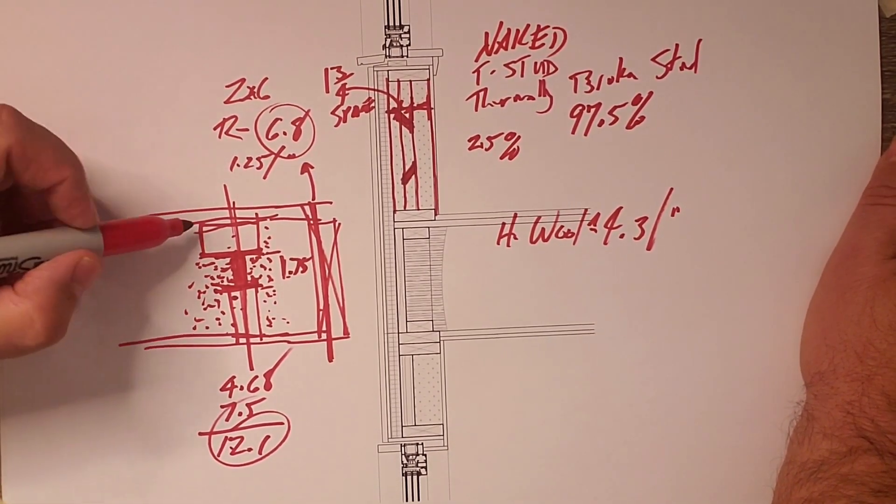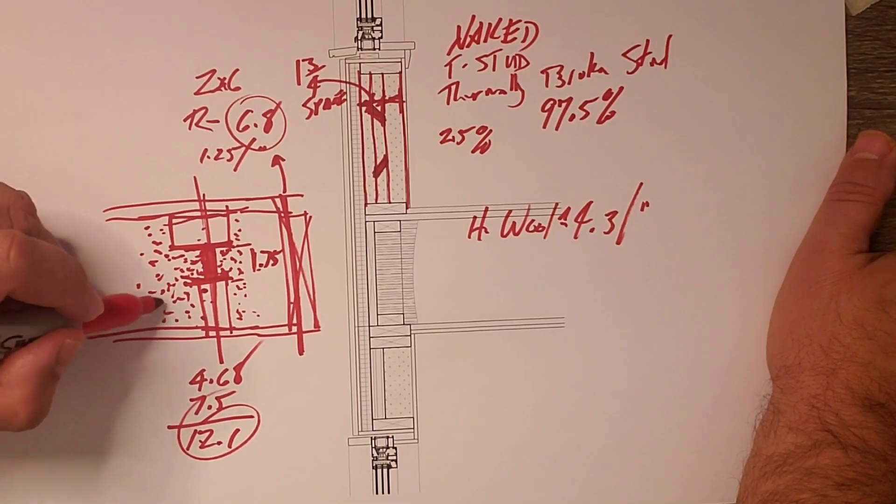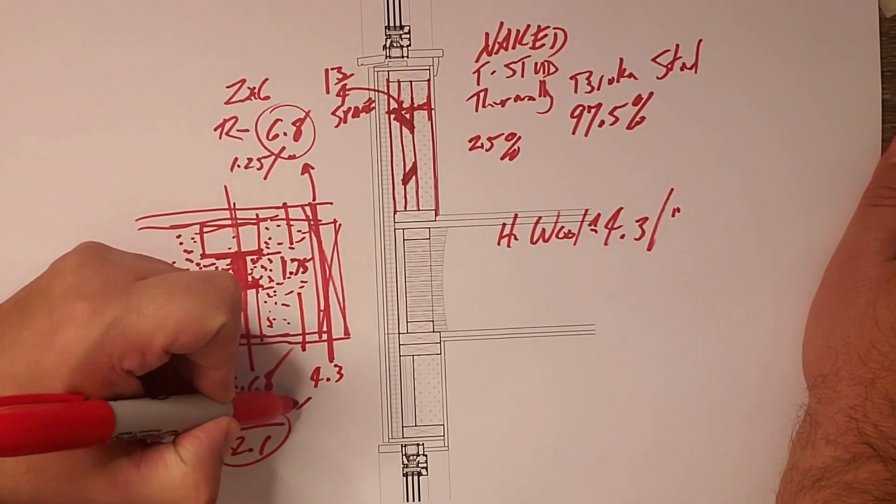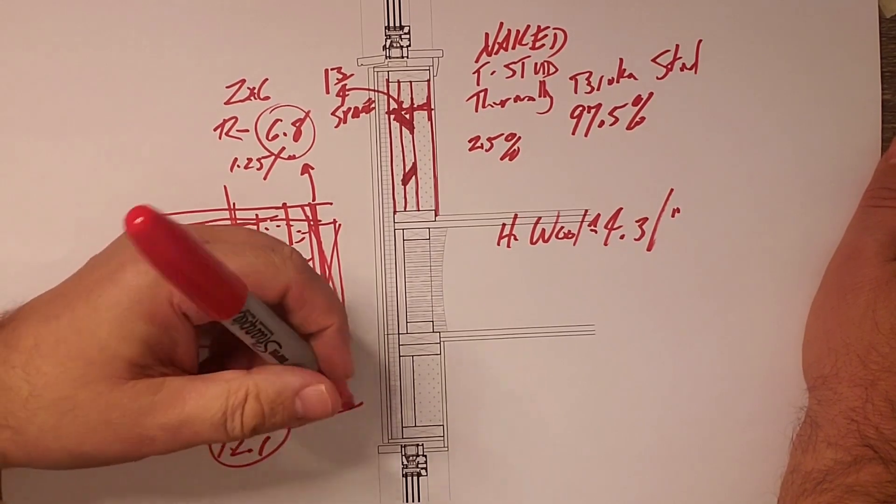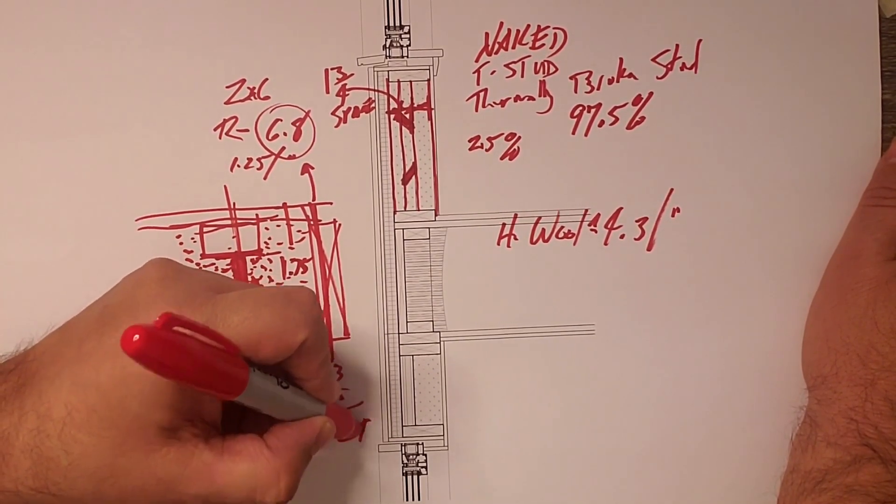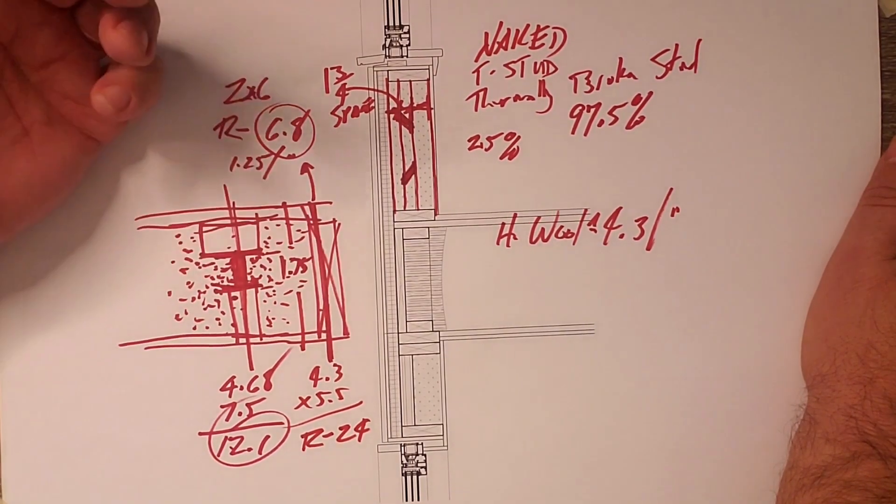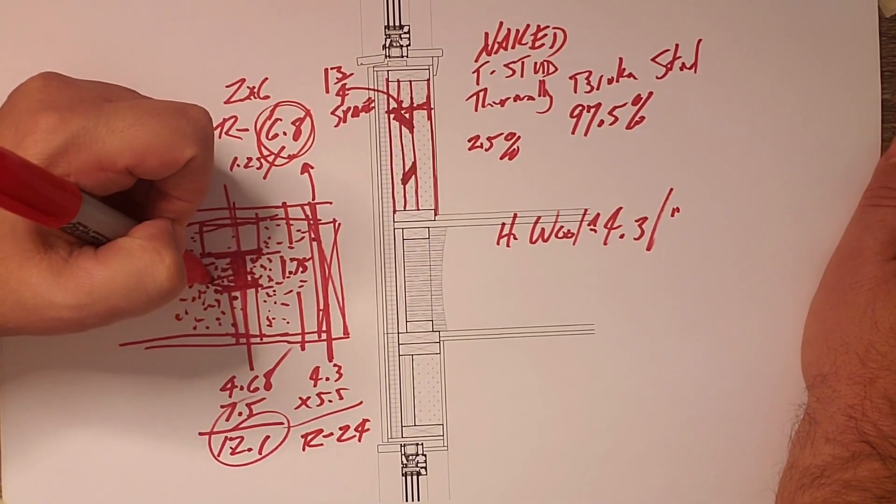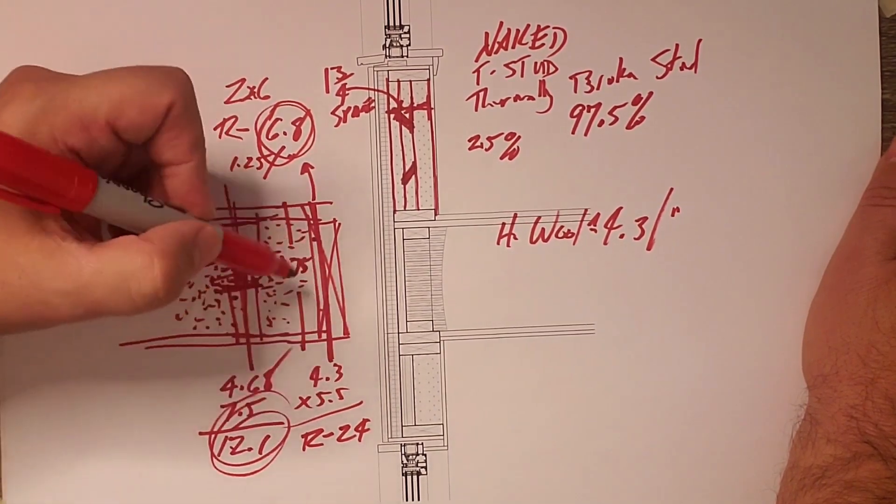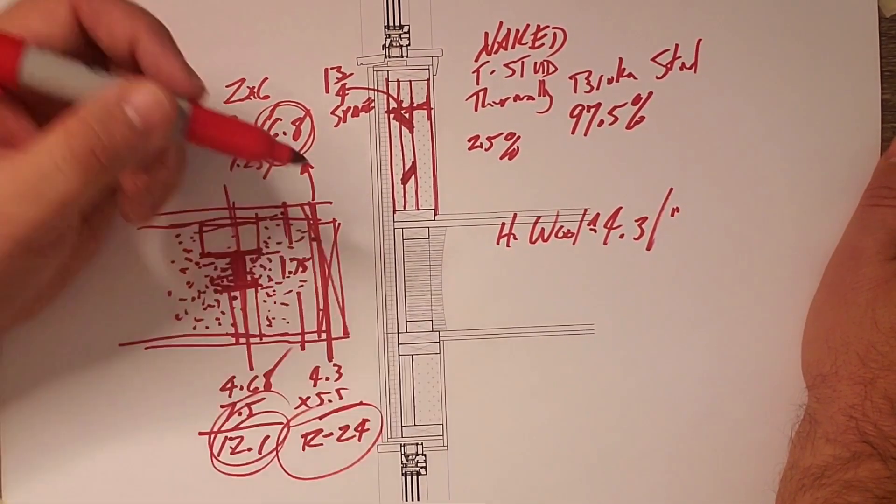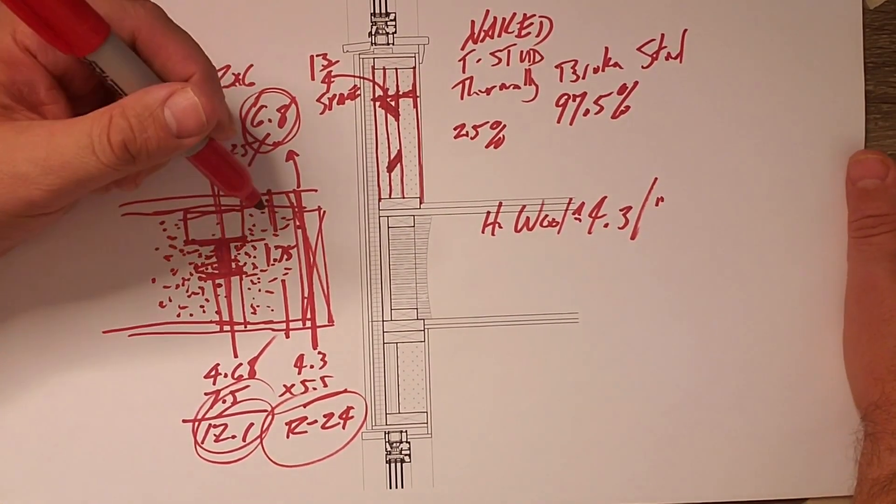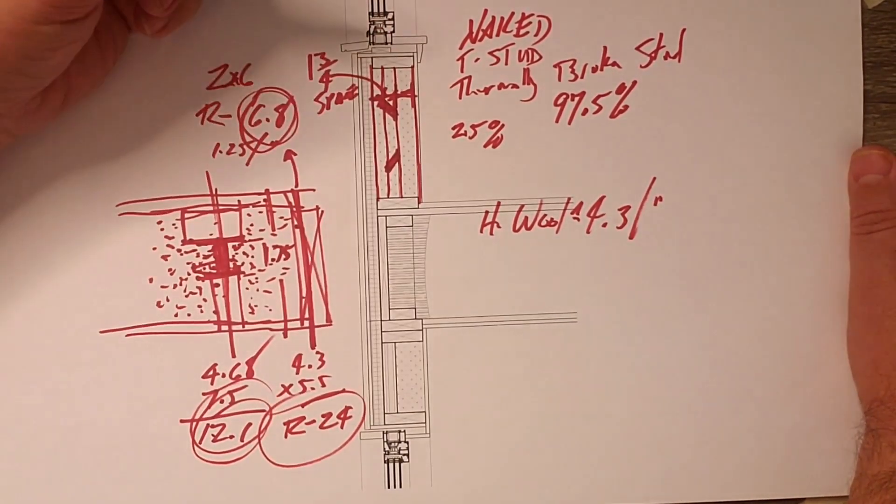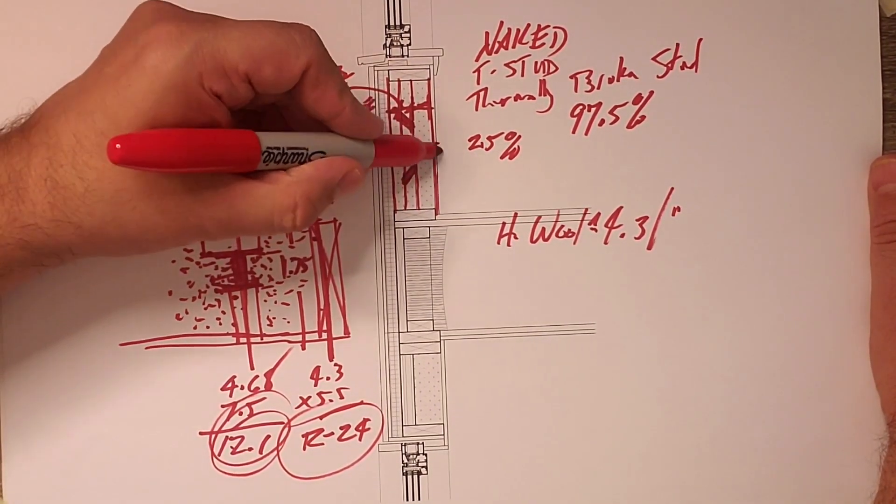So we have 12.1 at the stud now if we measure across the cavity here the open cavity we get the 4.3 times 5.5 and that comes out to roughly R24. All right so to summarize regular stud R6.8, T-stud with Havelock wool blown in the wall 12.1, cavity at Havelock wool R24. Now when we talk about walls and people say oh well I build an R21 wall or I build an R25 wall or R24 wall what they're usually talking about is the cavity insulation value or this R24.